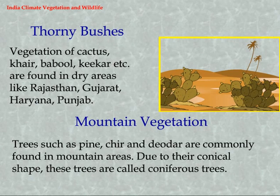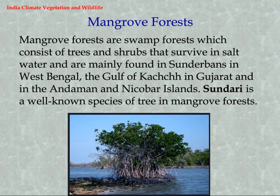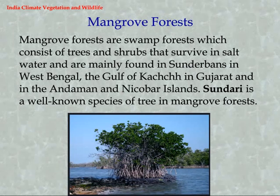Thorny bushes — vegetation of cactus, Khair, Babool, Kikar, etc. — are found in dry areas like Rajasthan, Gujarat, Haryana, and Punjab. Mountain vegetation: trees such as pine, Chir, and Deodar are commonly found in mountain areas. Due to their conical shape, these trees are called coniferous trees. Mangrove forests are swamp forests consisting of trees and shrubs that survive in salt water, mainly found in the Sundarbans in West Bengal, the Gulf of Kutch in Gujarat, and the Andaman and Nicobar Islands. Sundari is a well-known species of tree in mangrove forests.